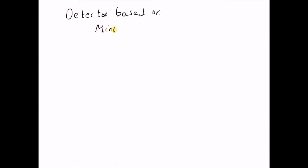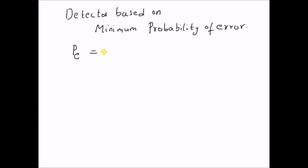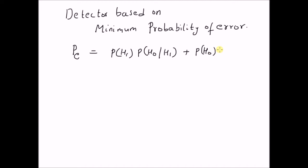We want to design a detector based on minimum probability of error. The probability of error PE is defined as the sum of the probability of making a miss plus the probability of making a false alarm. That is, the prior probability of the alternate hypothesis H1 multiplied by the probability of a miss, P(H0|H1), plus the prior probability of the null hypothesis H0 multiplied by the probability of false alarm P(H1|H0). The sum of these two probabilities gives the probability of error.